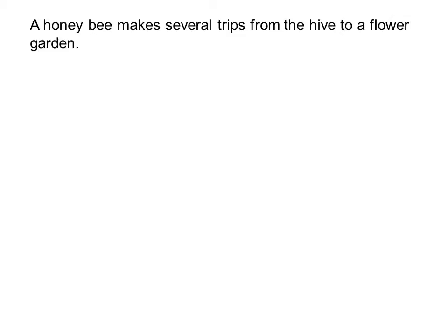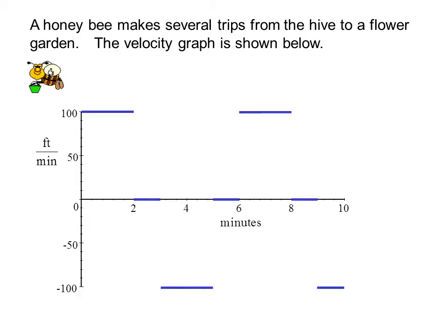A honey bee makes several trips from the hive to a flower garden. The velocity graph is shown below. Apparently this bee can start and stop instantly. What is the total distance traveled by the bee?